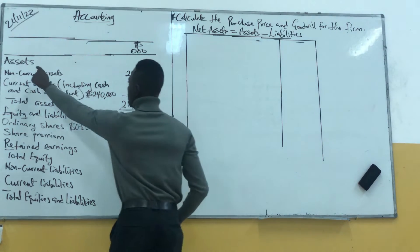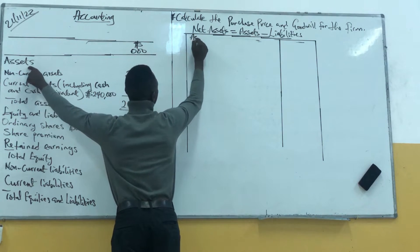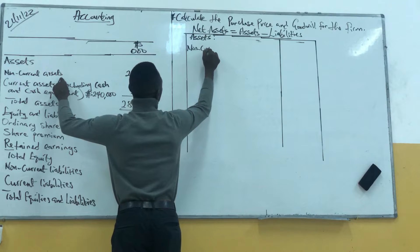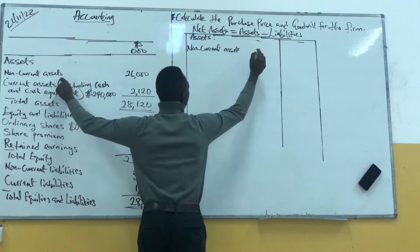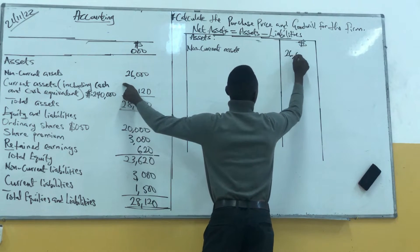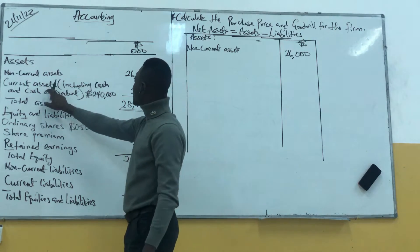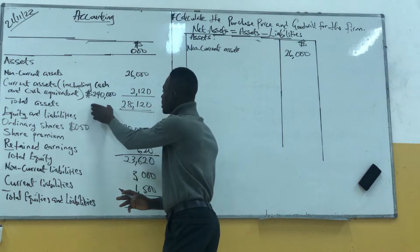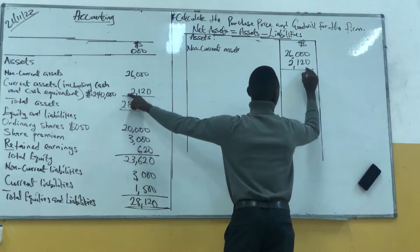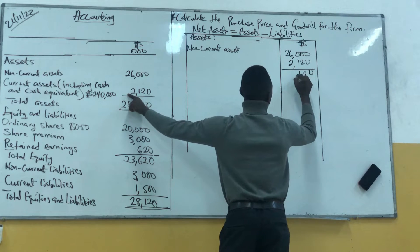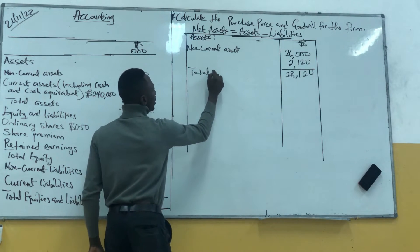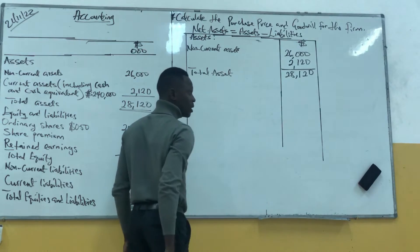For the assets: we have non-current assets. The non-current assets is $26,000. Then we have our current assets, including cash payments, with a value of $2,120. So we add them together — our total assets is $28,120.